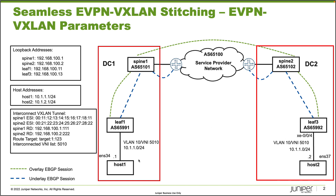Host1 and Host2 both use VLAN10 and VNI 5010. The IP addressing is: Host1 is 10.1.1.1 and Host2 is 10.1.1.2. We will be configuring some interconnect VXLAN tunnel parameters on Spine1 and Spine2.